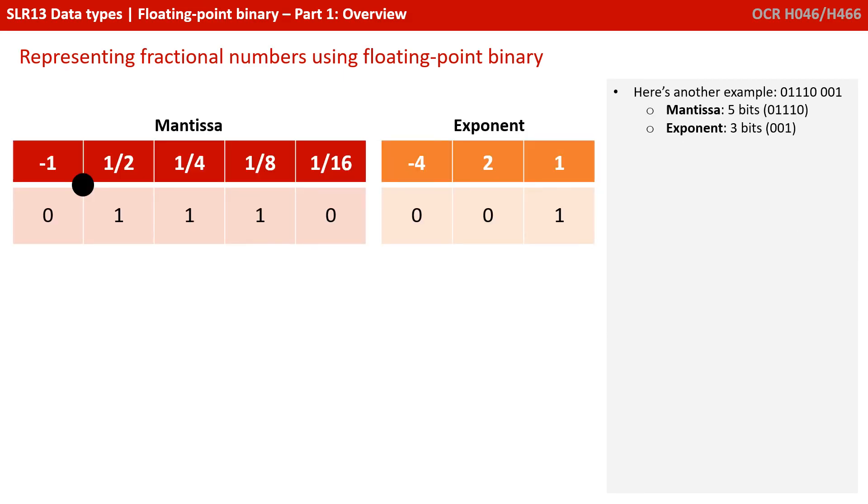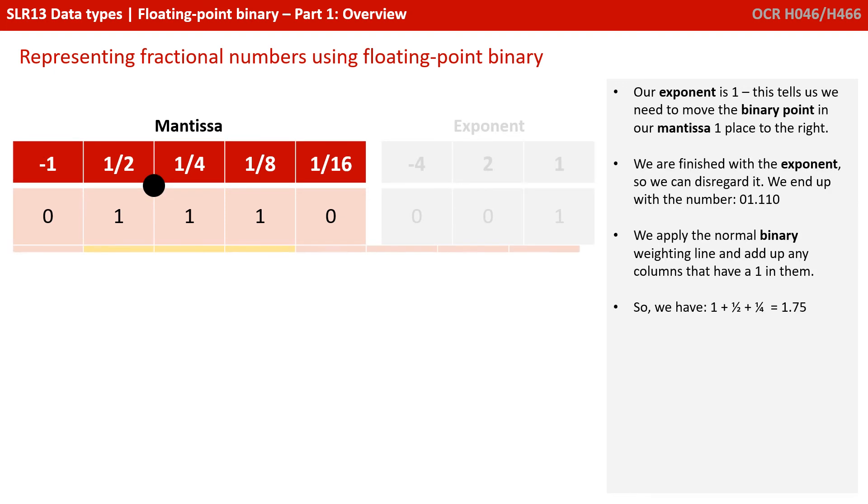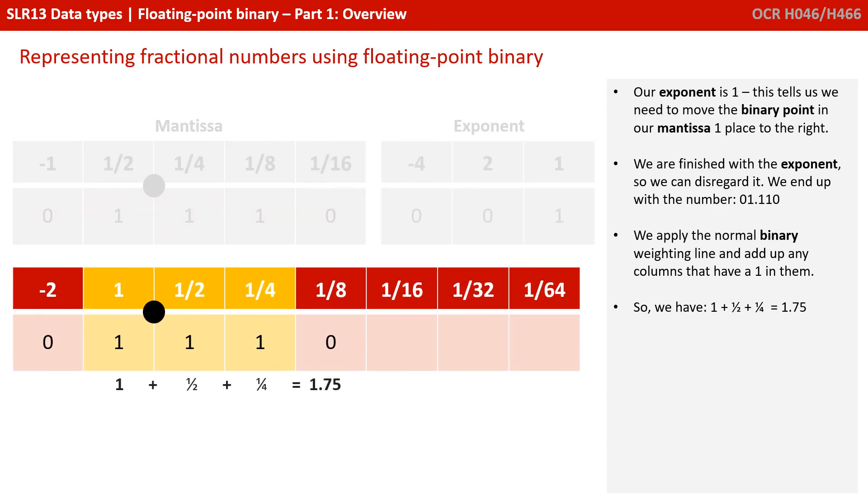OK, let's have another look at another example. Again, 8 bits, 5 for the mantissa and 3 for the exponent. This number is 01110011. Now our exponent is 1. That's all we've got here, nothing in the 2 column, nothing in the minus 4. So it tells us to move the binary point in the mantissa one place to the right. Positive exponent moves the binary point to the right. We've finished with the exponent, so we disregard it, and we end up with the number 01.110. We apply the normal binary weighting line and add up any columns with a 1 in. We have a 1 plus a half plus a quarter. So this number is 1.75.